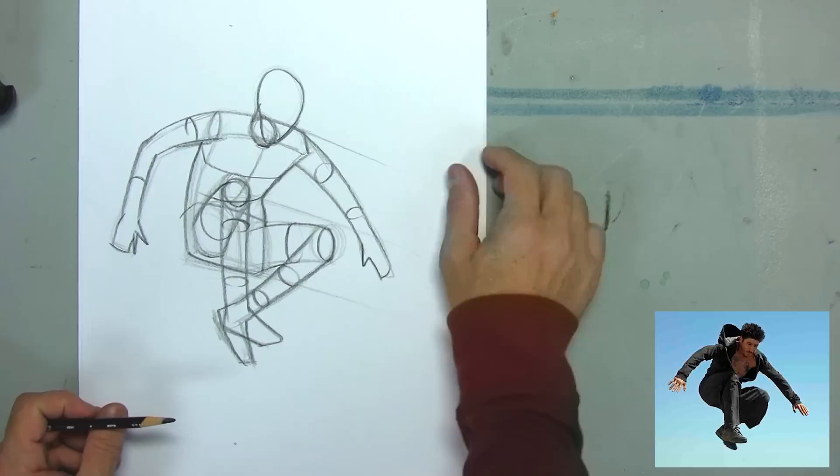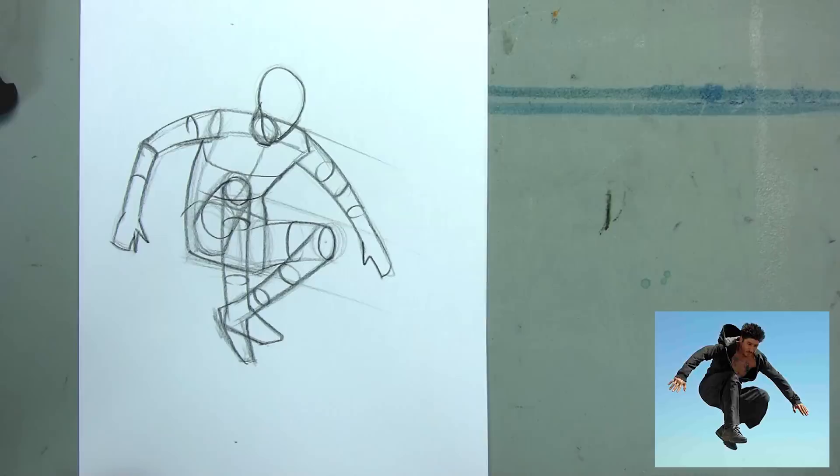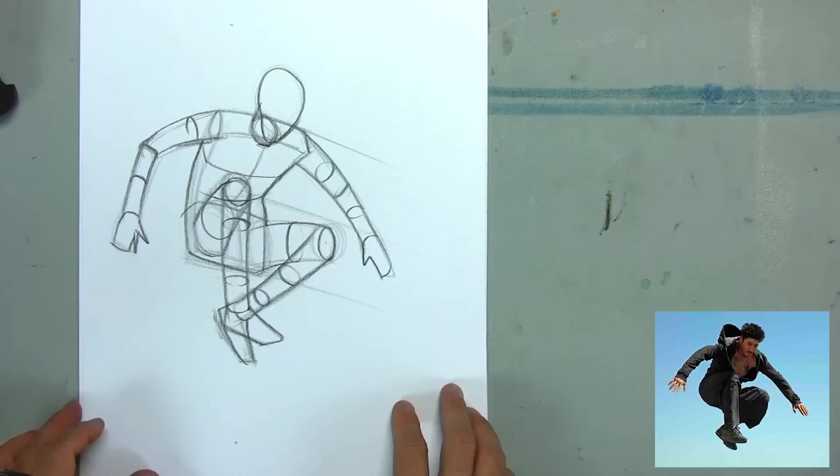Here I'm blocking out the elbow ellipses and then the wrist ellipses, the ankle ellipses, and now I have enough information that I can transfer over to the next sheet of paper into our new position.